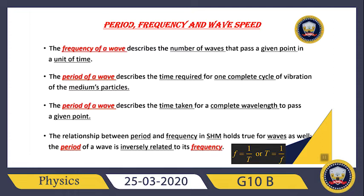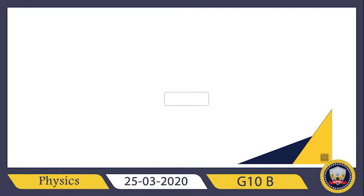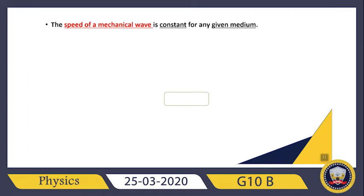So we have studied the period, the frequency, and the relation between them. Now we are going to study the wave speed. The speed of the mechanical wave is constant for any given medium — it's constant in a given medium, not in general.